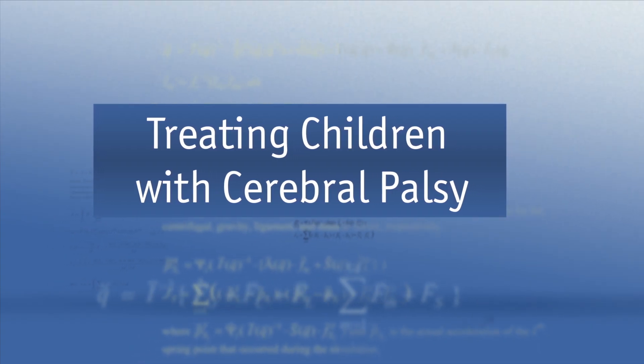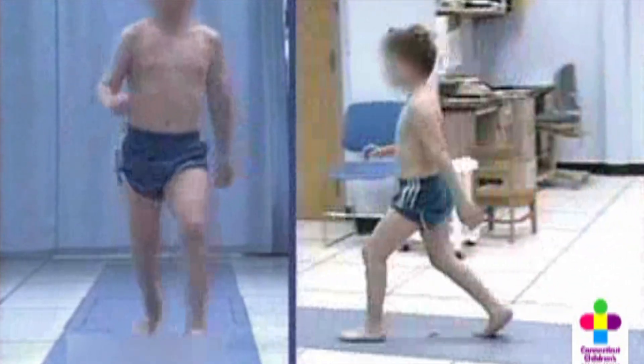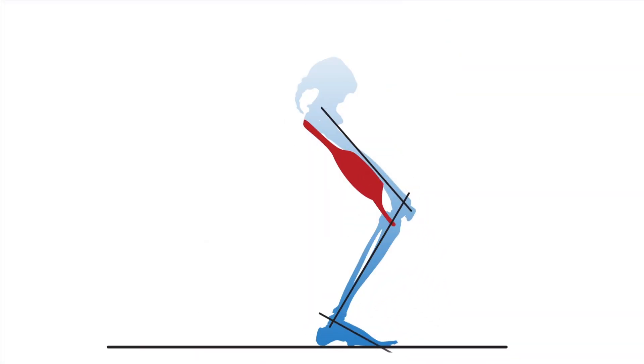Cerebral palsy is caused by an injury to the brain that occurs near the time of birth. This injury to the brain will cause problems with movement, coordination, and walking as the child grows up. The hamstrings are the large group of muscles in the back of your thigh.